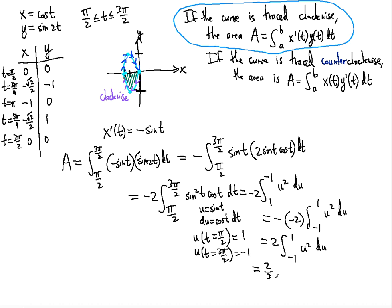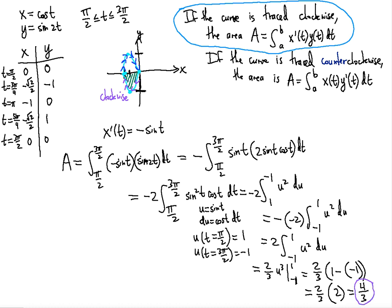That becomes positive 2 from negative 1 to 1 of u squared du, which evaluates to 2 over 3 times u cubed from negative 1 to 1. Substituting: 2 over 3 times (1 cubed minus (negative 1) cubed) equals 2 over 3 times (1 minus negative 1) equals 2 over 3 times 2 equals 4 over 3. So the area enclosed by the given curve represented by the two parametric equations is 4/3. Thank you for watching — I hope you enjoyed this tutorial and I'll see you in the next video.